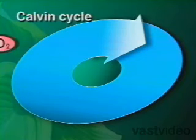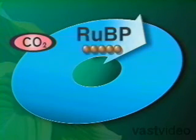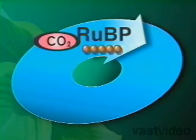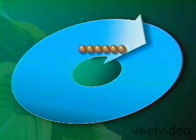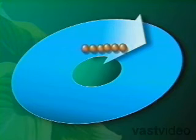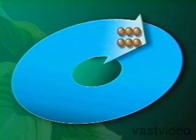Carbon dioxide reacts with a 5-carbon molecule of RUBP, forming a 6-carbon molecule. This splits into two 3-carbon molecules.